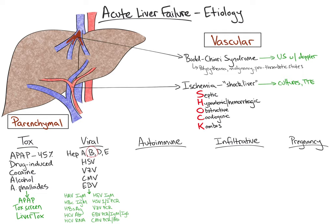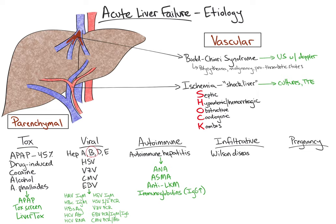The most common autoimmune etiology is autoimmune hepatitis. We evaluate for autoimmune hepatitis by obtaining an ANA, anti-smooth muscle antibody, anti-LKM antibody, and immunoglobulins, as IgG is often elevated. Infiltrative etiologies include Wilson disease, hemophagocytic lymphohistiocytosis, or HLH, and malignancy.